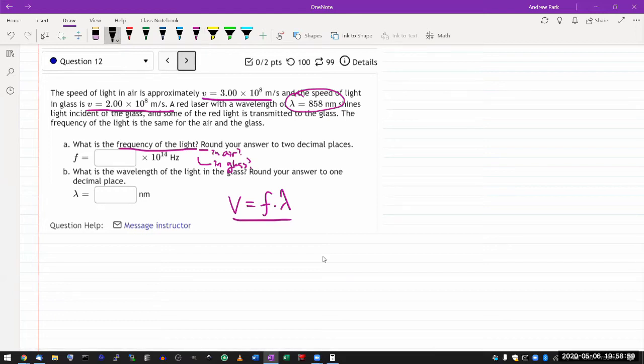So if I'm doing that, then it's a relatively easy question. I have this relationship here. Let me solve that for frequency. Frequency is the wave speed, three times 10 to the eighth meters per second in air, divided by the wavelength.